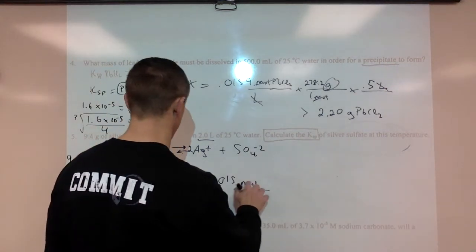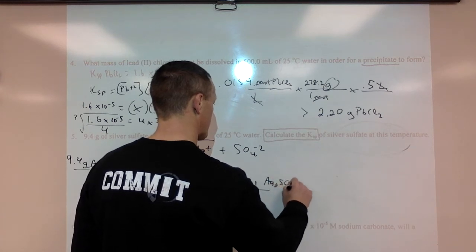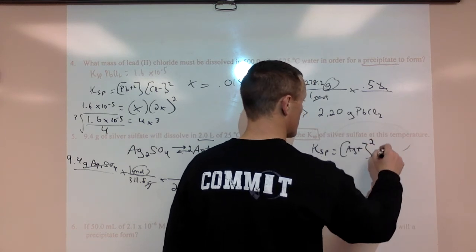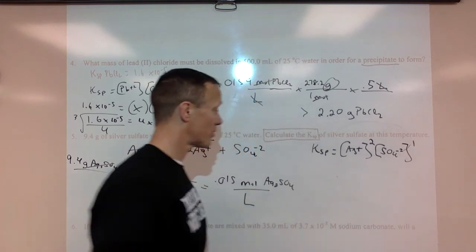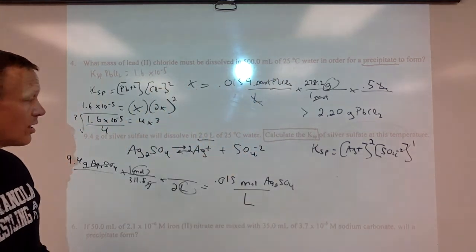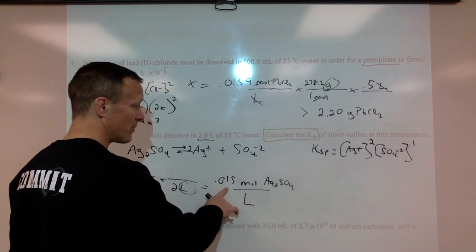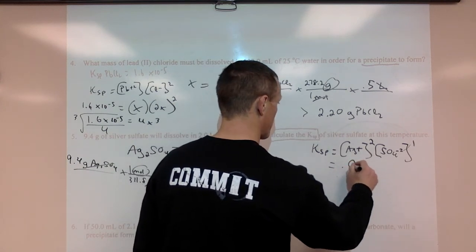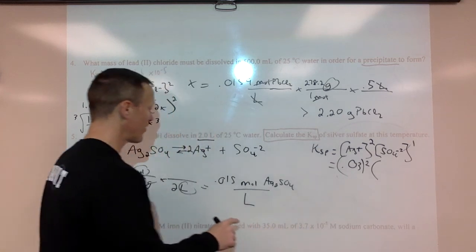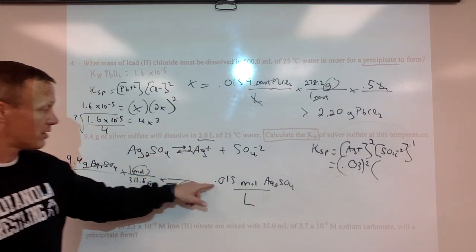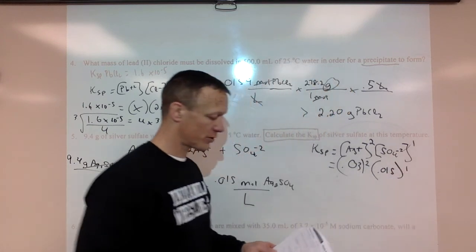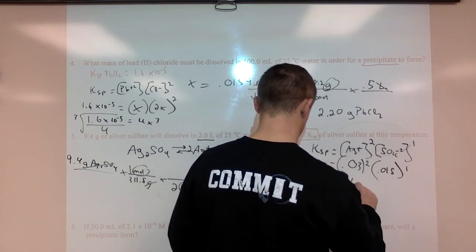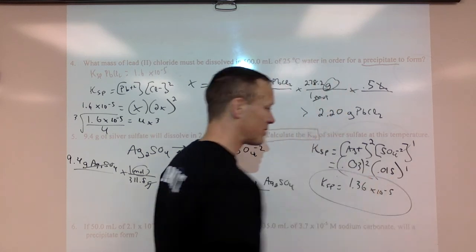Now we want to know the KSP. So remember this is moles of Ag2SO4. So the KSP equals concentration of silver ions squared times concentration of sulfate ions to the first power. If this is the molarity of the whole compound, when it splits apart, it's going to make two moles of silver ions. This is going to be double for silver. So we're going to put in 0.03 squared. Sulfate ions are in a one-to-one ratio with the compound, so it's going to be 0.015 to the first. So square 0.03, multiply by 0.015, and our KSP equals 1.36 times 10 to the negative 5.